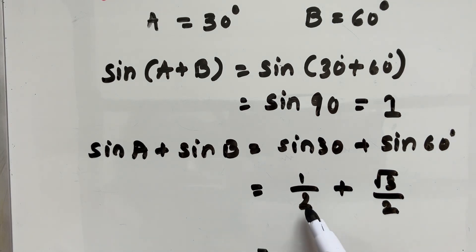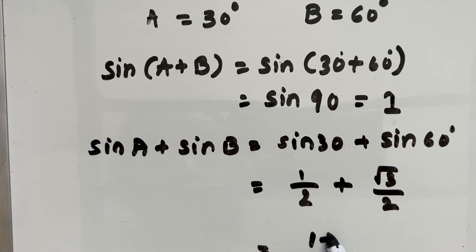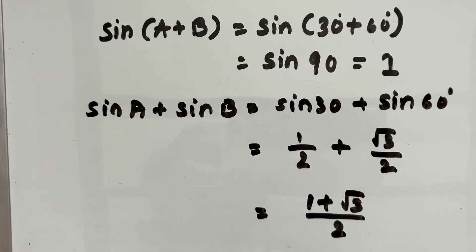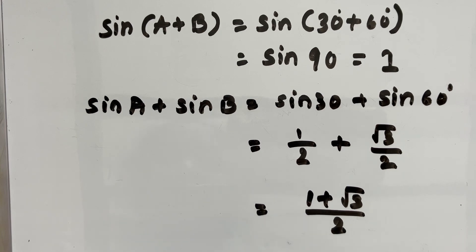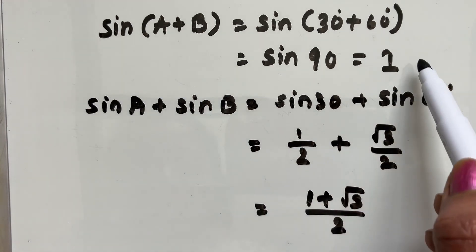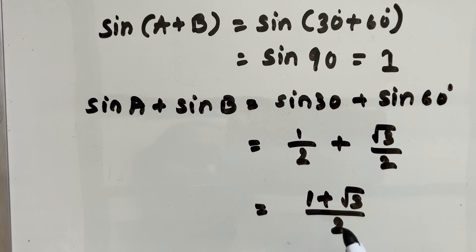So, 1 half plus root 3 over 2 is 1 plus root 3 over 2. You compare our left hand side and right hand side. They are not equal.